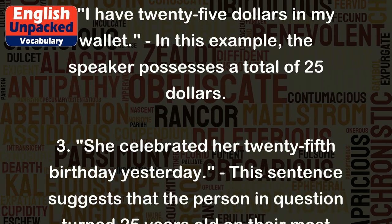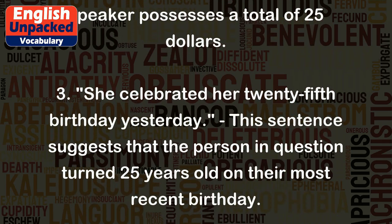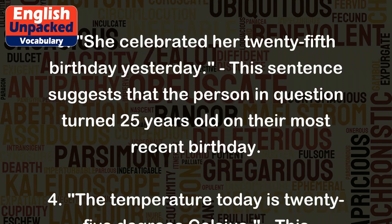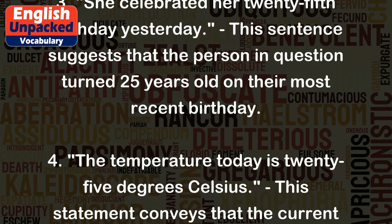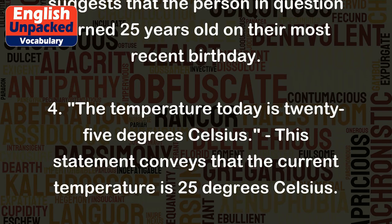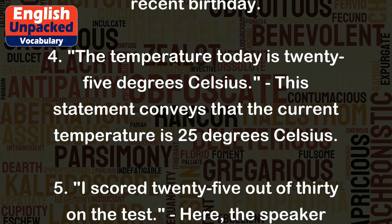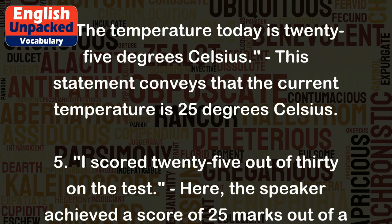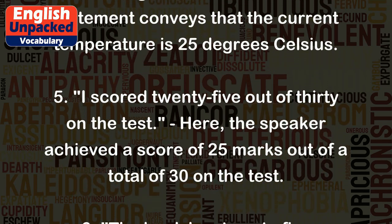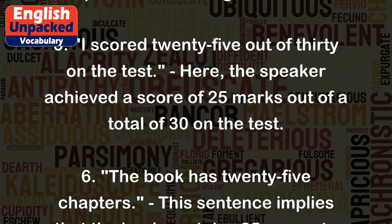3. She celebrated her 25th birthday yesterday — this sentence suggests that the person in question turned 25 years old on their most recent birthday. 4. The temperature today is 25 degrees Celsius — this statement conveys that the current temperature is 25 degrees Celsius. 5. I scored 25 out of 30 on the test — the speaker achieved a score of 25 marks out of a total of 30.